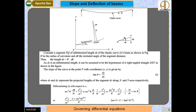Here we have considered one simply supported beam — simply supported at both ends — and due to its own weight, this beam is going to deflect along this curve, the elastic curve.